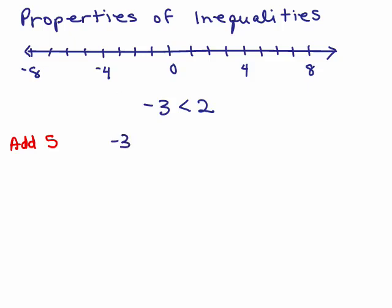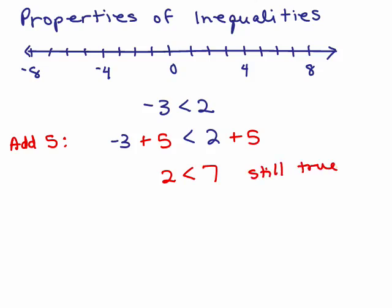We'd have negative 3 plus 5 and 2 plus 5. Negative 3 plus 5 is 2, and 2 plus 5 is 7, so it's still true that 2 is less than 7. So when we added 5, we still got a true statement. We're starting out with this original true statement, we add 5, and we still get a true statement.